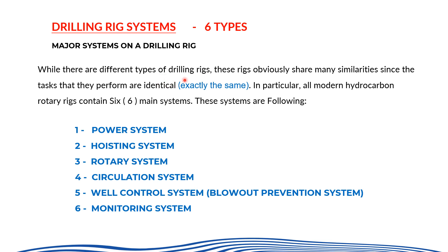For onshore rigs there is only one kind: the land rig. For offshore rigs there are multiple kinds — jackup rig, drill ship, semi-submersible rig, and barge rig. All rigs work similarly; their equipment and maximum operating procedures are the same. These rigs share many similarities since the tasks they perform are identical. In particular, all modern hydrocarbon rotary rigs contain six main systems.